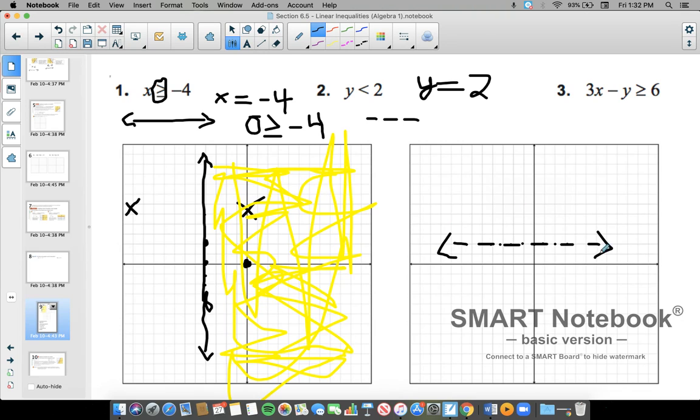So now I have to do the inequality part. So I pick a test point. Like I said, I like zero, zero, as long as the line doesn't go through it. You have to pick a point off the line. So I pick zero, zero. Don't have to worry about the x. Zero is my y value. So zero is less than two. Is that true? Yeah, zero is less than two.